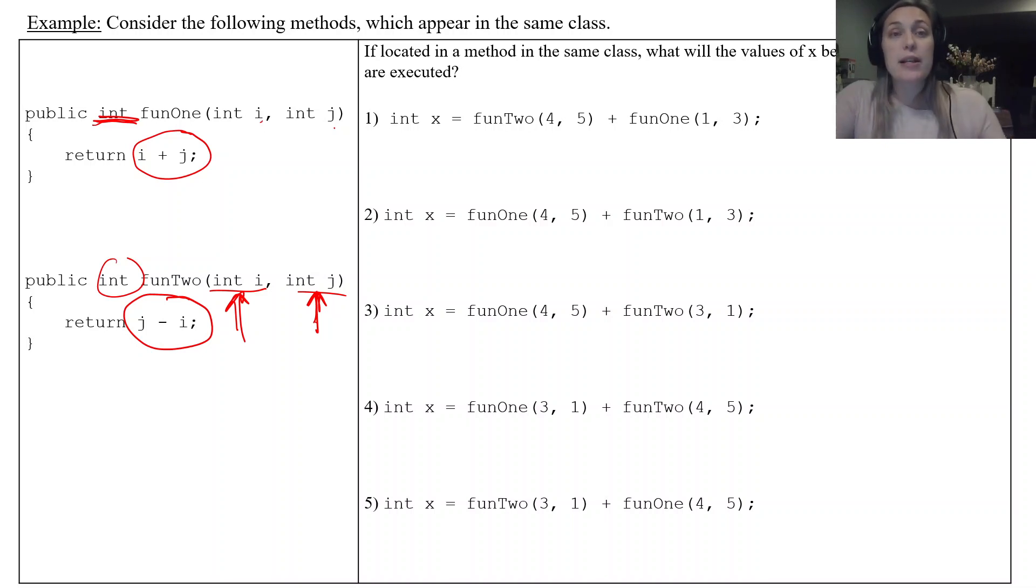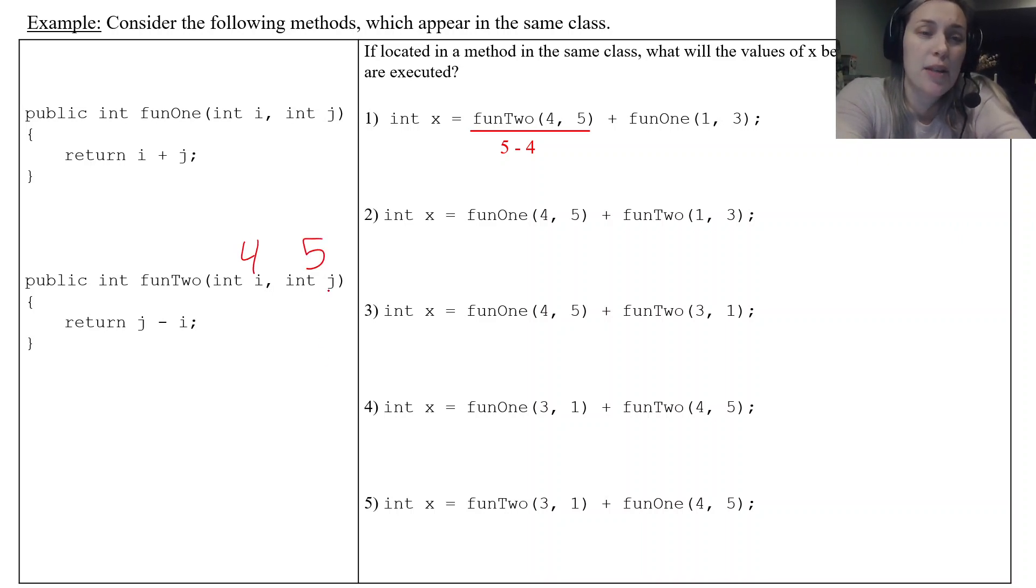So off to the right I have five examples. It says if these are located in method in the same class what will the values of x be after the lines of code are executed. So you can see here in like number one I have a method called a fun two and I have a method called a fun one. I'm going to add those together because those both return integers and the sum of that is what's going to be stored in x there. So let's start off with fun two. Fun two returns j minus i. Now since it passed four comma five j is five and i is four. Okay which the result of that is is a one. Right this is a one. So same thing with fun one. Fun one is up here. I pass it a one and a three and I just add one plus three which is four. Okay and then after those two method calls happen I add the one plus the four and x is going to have the value of five.